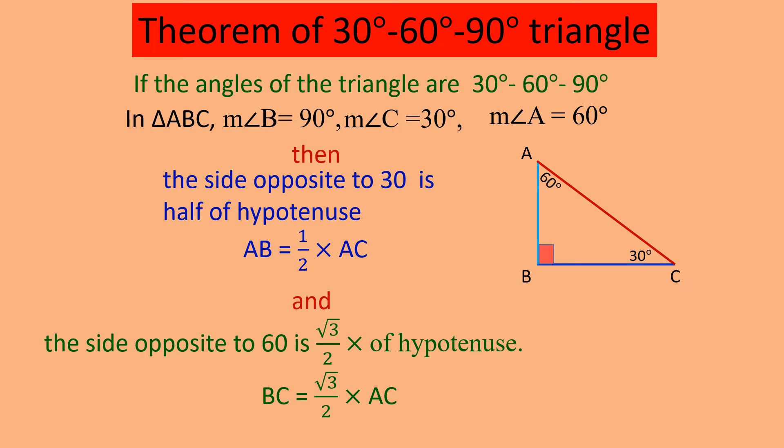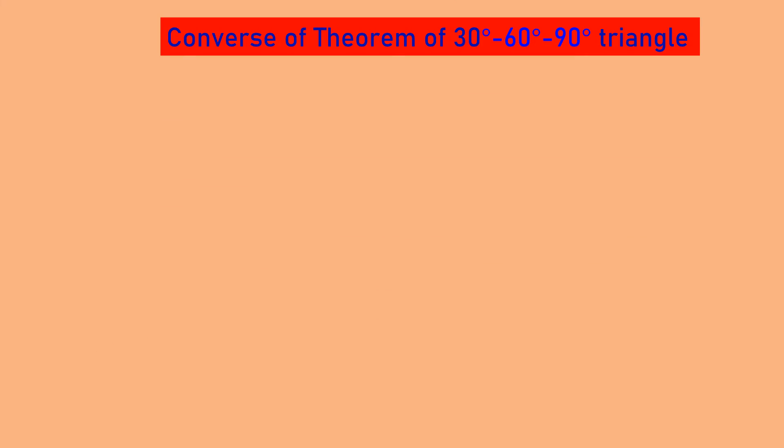So we can say in the 30-60-90 degree theorem: the side opposite to 30 degrees is half of the hypotenuse, and the side opposite to 60 degrees is root 3 upon 2 of the hypotenuse AC.